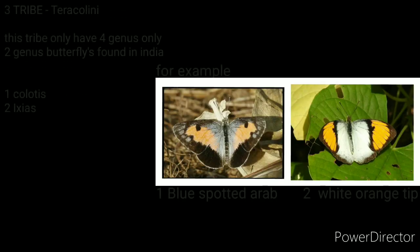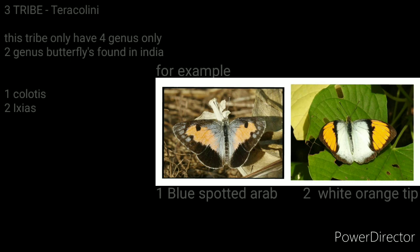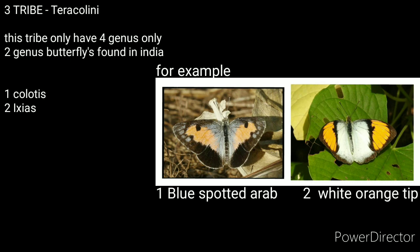The third tribe is Teracolini. This tribe has only four genera, and only two of them are found in India. For example, the Blue-spotted Arab from genus Colotis, and the White Orange Tip from genus Ixias.